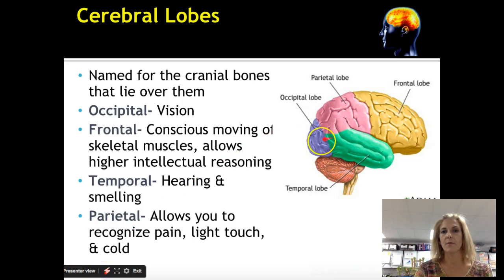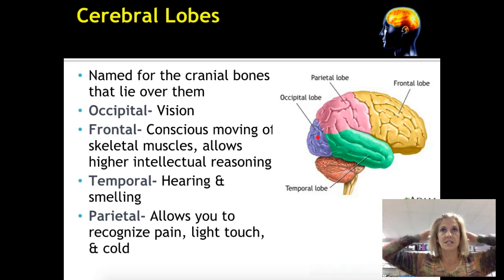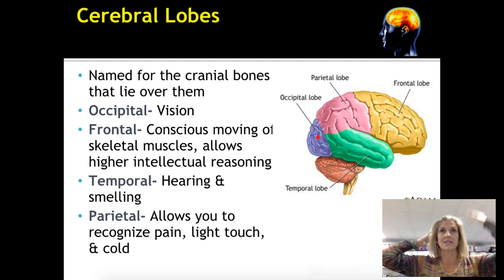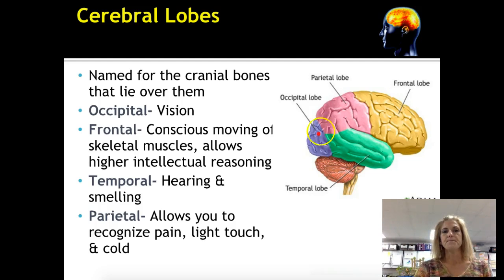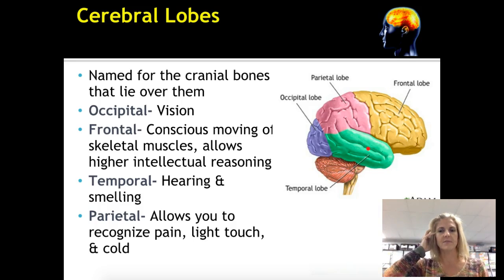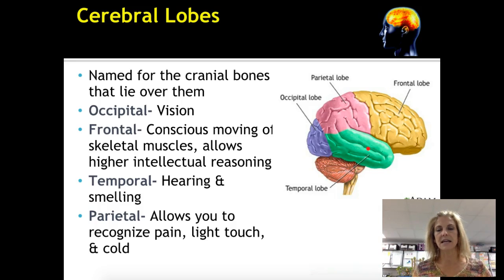The occipital lobe, shown here in blue, is for vision. When you look at something, information goes in through your eyes and travels back to the occipital lobe, which tells you what you're looking at. The temporal lobe looks like an earmuff and handles hearing and smelling. Auditory information — sound — is processed in the temporal lobe. Olfaction, or smelling, traces back to the temporal lobe as well.